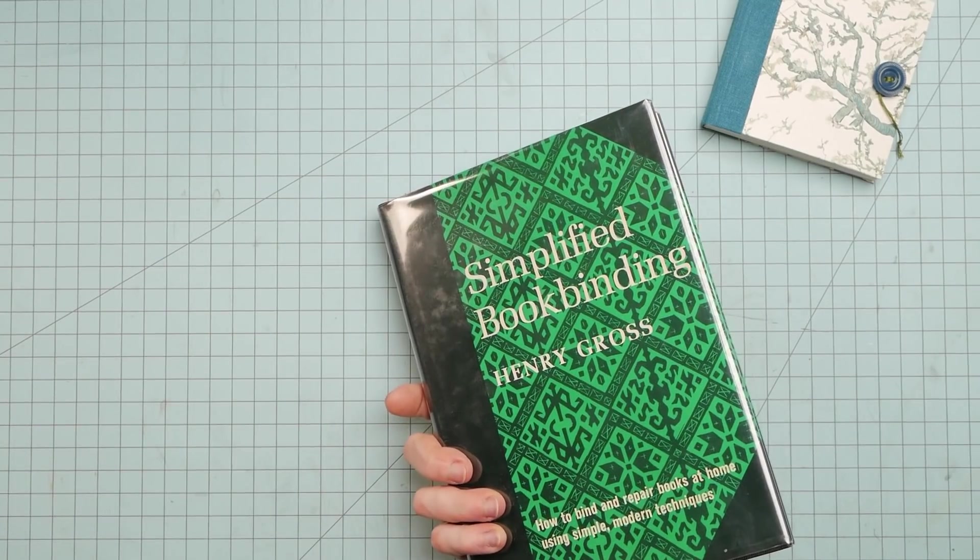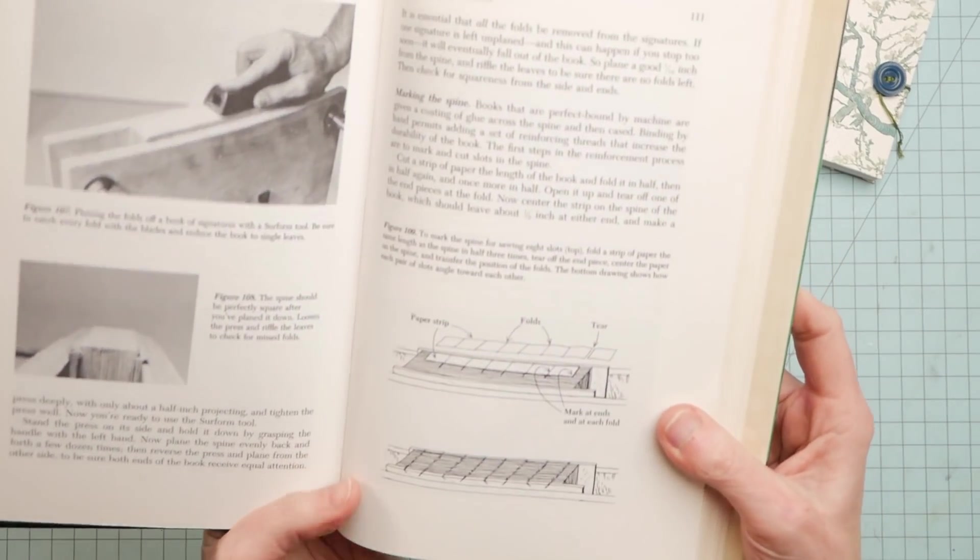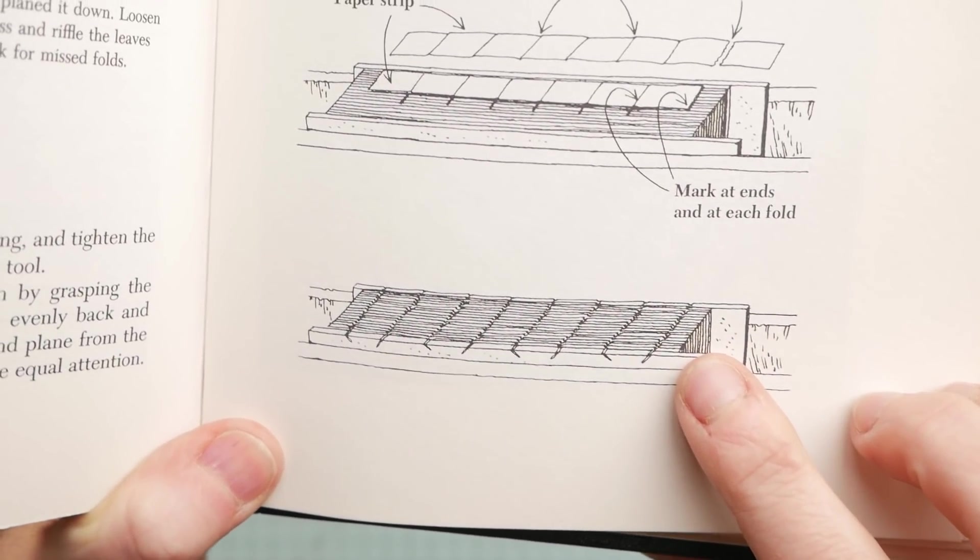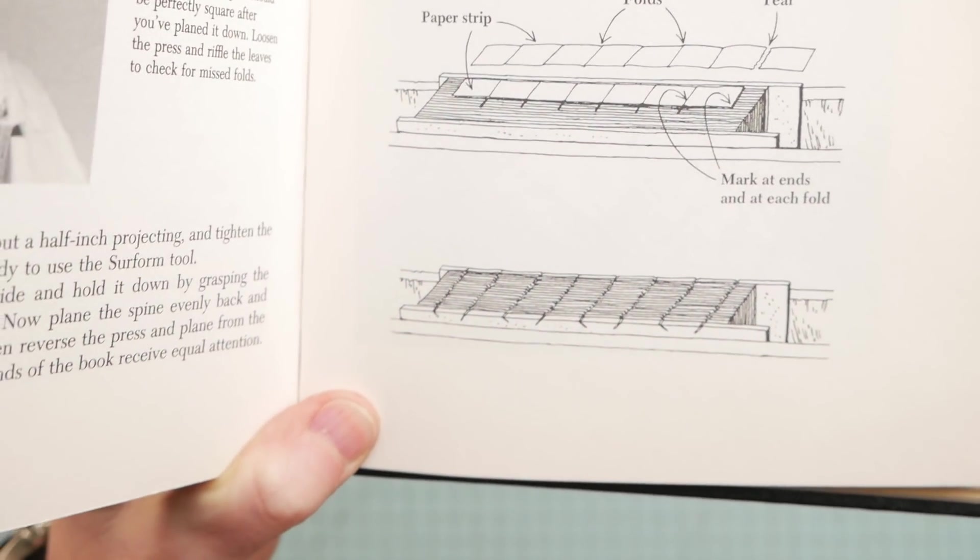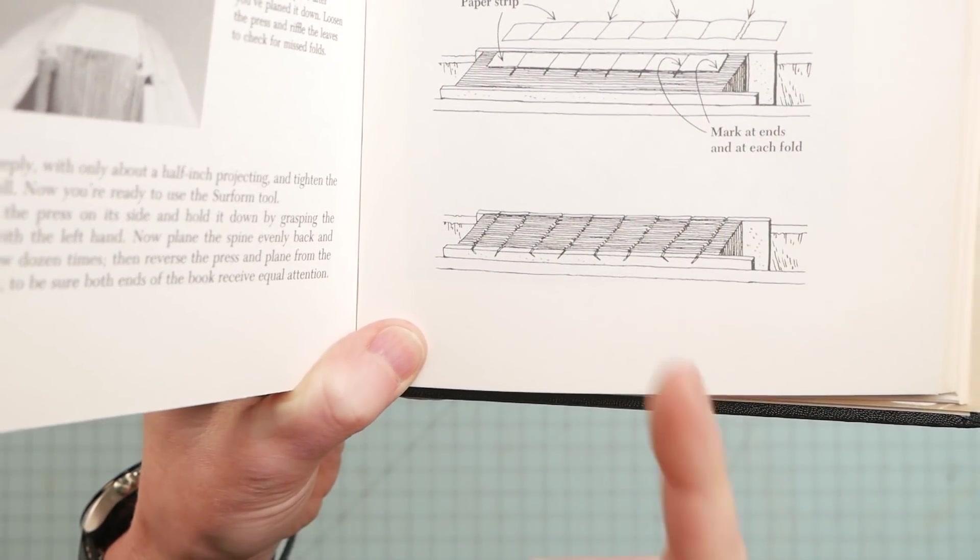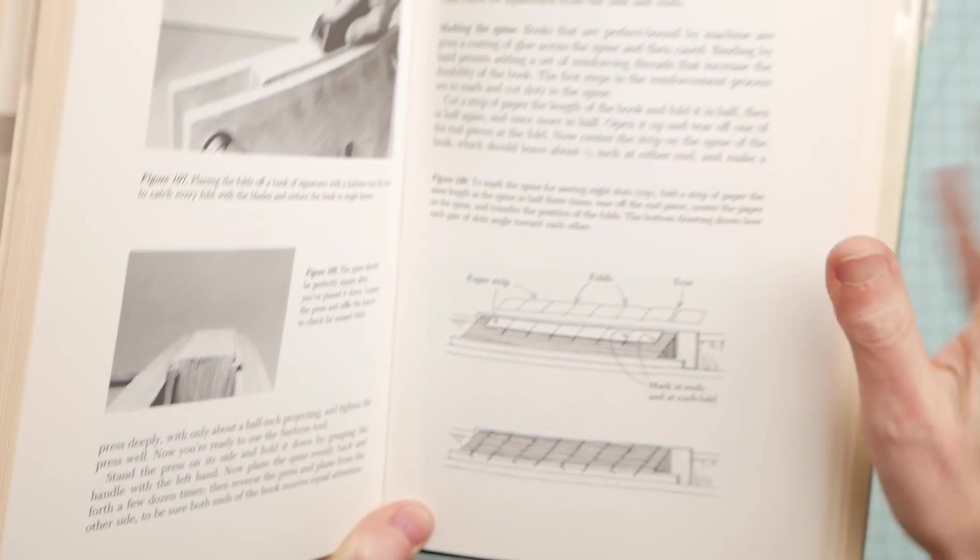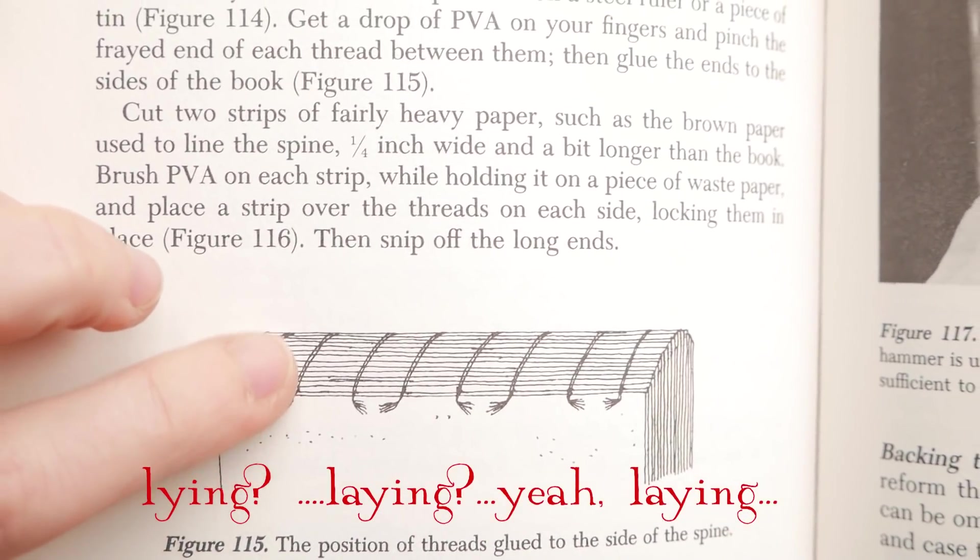In one of the books that I have, he talks about non-sewn bindings and I use the version of what he's doing here. You might be able to see in this picture here how all the pages are all lined up and then he has sliced grooves through the spine end. He has taken a saw or an exacto knife, usually a little saw, and has made little slices just into the paper. So I do that.